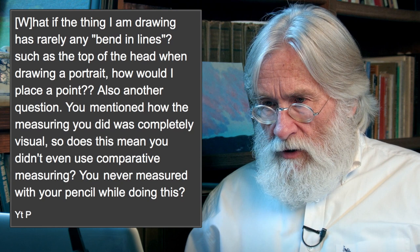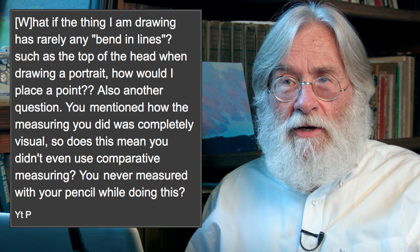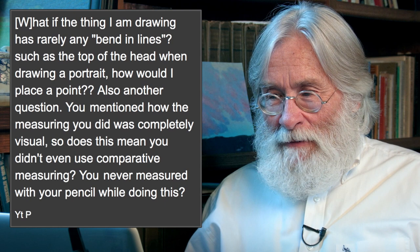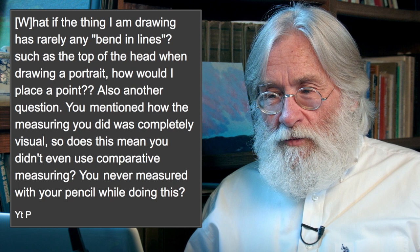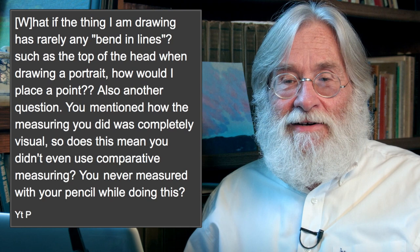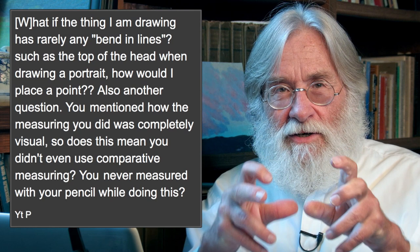If the thing I'm drawing has rarely any bend in lines, such as the top of the head in a portrait, how would I place a point? I think of what you think of as the most pure thing — a circle. This story goes with a couple of different artists, but apparently Giotto was being interviewed for a job as a painter, and when they wanted to know what his skills were like, he drew them a perfect circle. That's funny in the context of points, because on a circle there's an infinite number of points, unless the circle is damaged or has a bend in it.